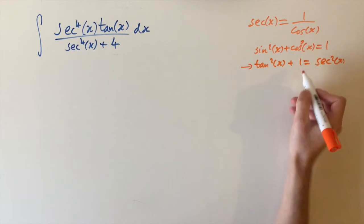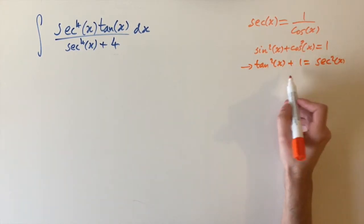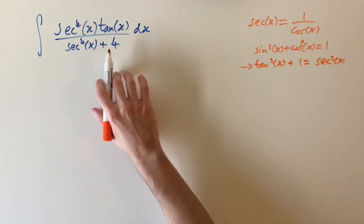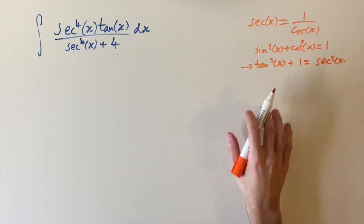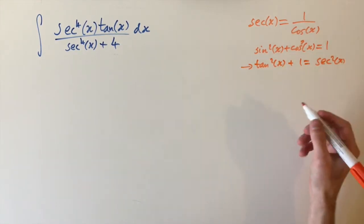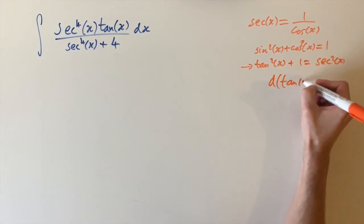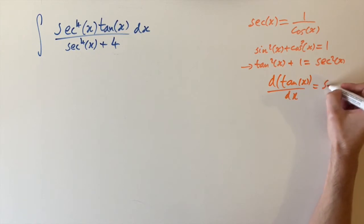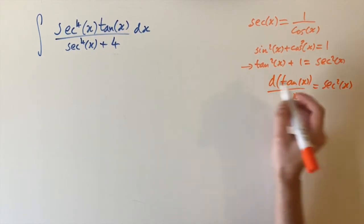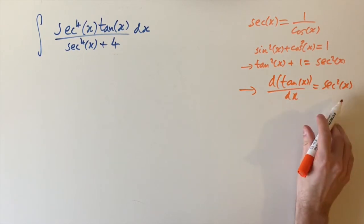So that's one relationship between sec and tan, and we might want to use that. I don't really see how this is going to help us because it's going to give us some nasty expansions. Another relationship between sec and tan is we know that the derivative of tan of x with respect to x is just sec squared of x.